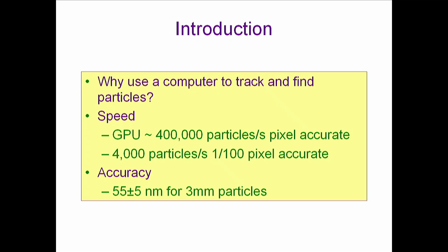I wasn't tracking 400,000 particles per second using that method - I probably didn't even track 4,000 particles total using that technique. The computer just happily does it without any problem. The other thing is that it can be extremely accurate - much better at finding the exact center. We have GPU codes that can do about 400,000 particles per second with pixel-accurate code, and about 4,000 particles per second with 1/100th of a pixel accuracy routinely. We can get accuracies up to 55 nanometers on a 3mm particle - about a tenth the wavelength of light.